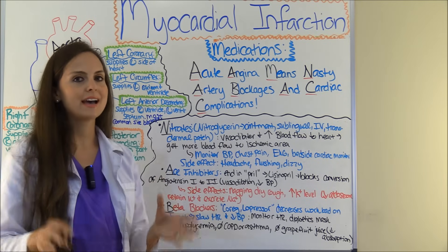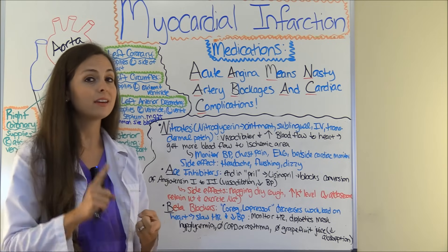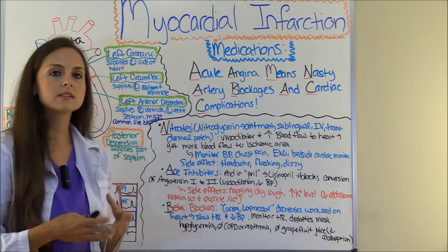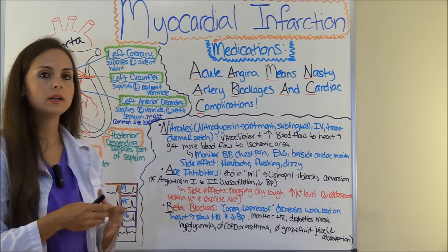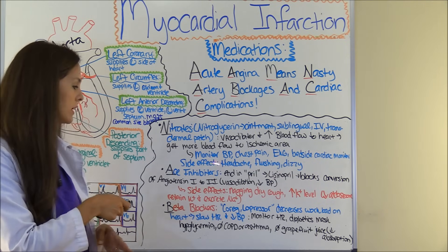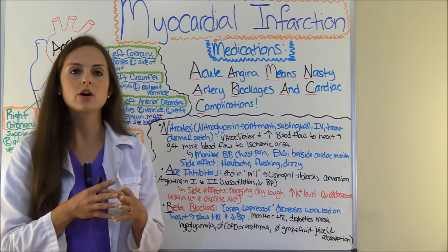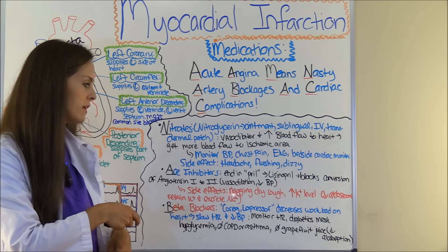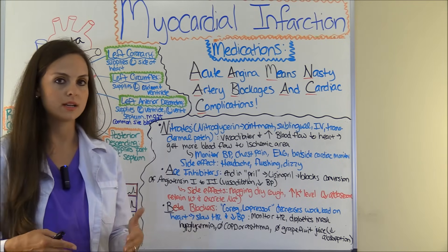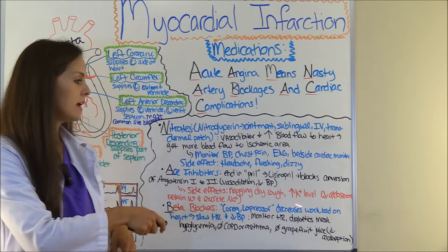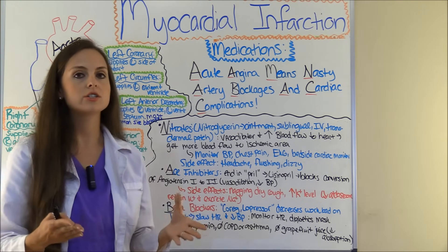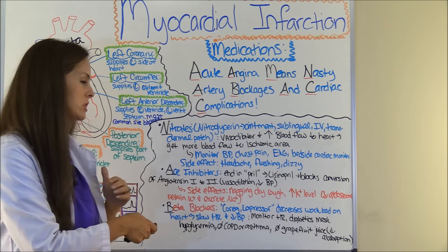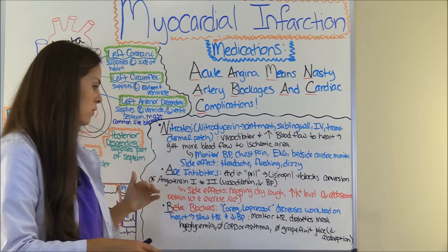Side effects of nitroglycerin include headache — because of vasodilation, all that blood is pumping to the head. Teach the patient they'll probably get a headache, and they may also feel warm, flushed, or dizzy. Next, A for ACE inhibitors — angiotensin-converting enzyme inhibitors — which typically end in -pril, such as lisinopril. They work by blocking the conversion of angiotensin I to angiotensin II, causing vasodilation, dropping blood pressure, and decreasing the workload on the heart. A side effect is a dry, nagging cough. Also, these drugs increase potassium by decreasing aldosterone, causing the body to retain potassium and excrete sodium, leading to hyperkalemia.